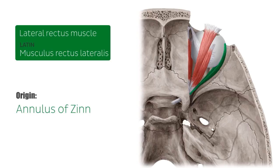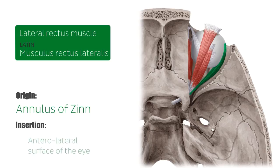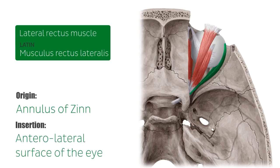The annulus of Zinn is formed by the tendons of the four rectus muscles: lateral, medial, superior and inferior. The lateral rectus, as the name suggests, is found on the lateral aspect of the eyeball and it inserts onto the anterolateral surface of the eye.